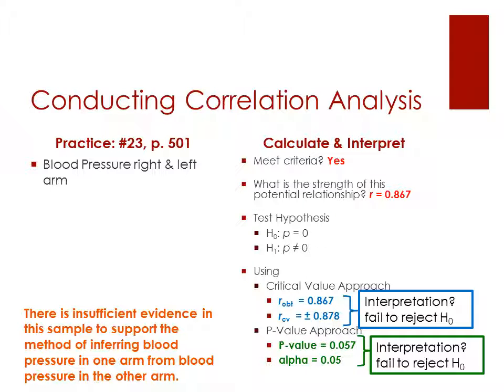So here our interpretation would be there's insufficient evidence in this sample to support the method of inferring blood pressure in one arm from blood pressure in another arm.